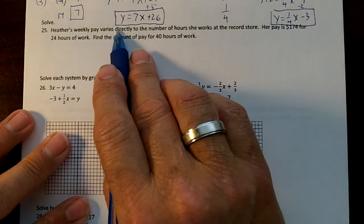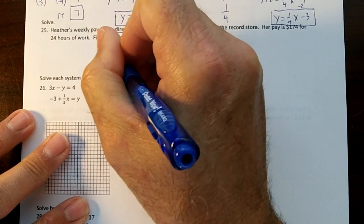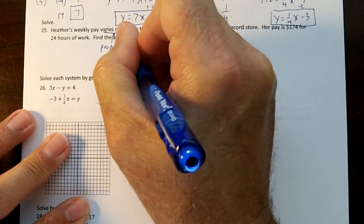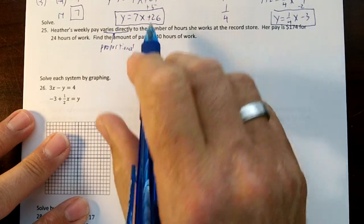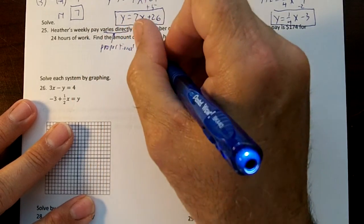Okay, Heather's weekly pay varies directly. Varies directly means proportional, so we are going to set up a proportion just like you have been doing since sixth grade. So her pay varies to the number of hours, so we're going to put pay over hours.